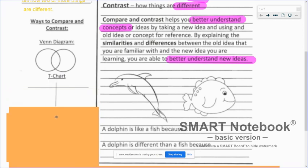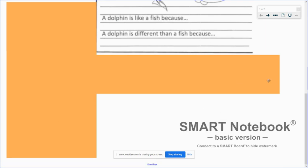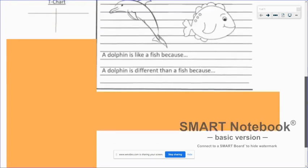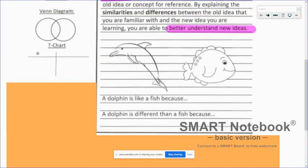And then you've also done T-charts where you would list, for example, dolphin at the top of one of these and fish at the top of the other. And then you would list everything that you know about them below it.